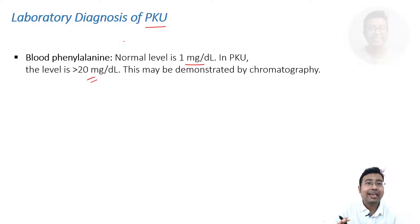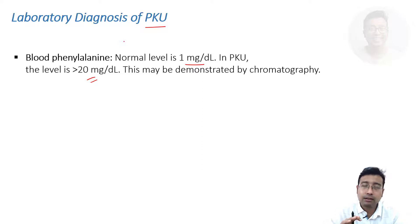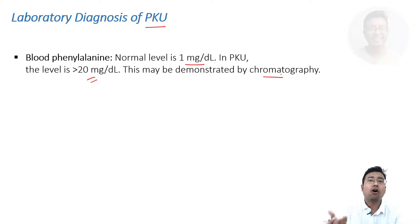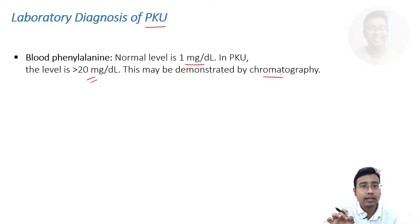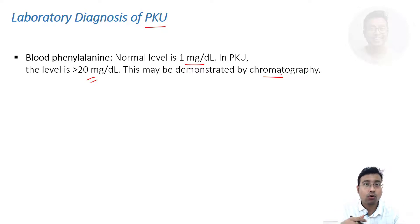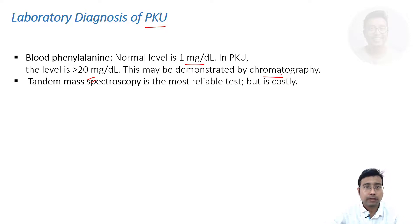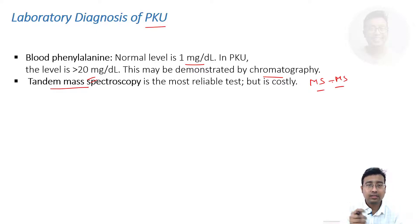Whenever any amino acid needs to be diagnosed, it is readily done by chromatography, and phenylketonuria is no exception. It can be demonstrated by liquid chromatography, high performance liquid chromatography (HPLC), paper chromatography, or thin layer chromatography. However, if you are asked the best method — the gold standard — that is always mass spectrometry. It is costly but the most reliable method, where two mass spectrometers are arranged in tandem: one to separate and one to diagnose, known as tandem mass spectrometry or MS-MS.